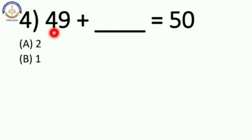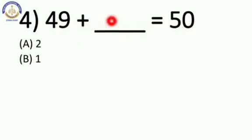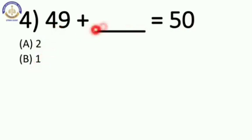Now next: 49 plus blank is equal to 50. 49 mein hum kitna add karenge to 50 milega? 2 ya 1? It's 1. 49 plus 1 is equal to 50. So your answer is B, 1.